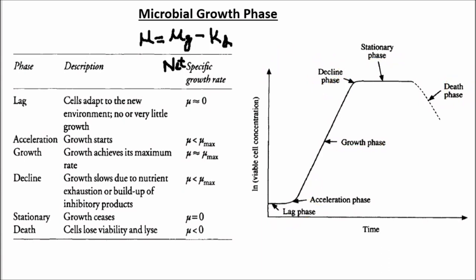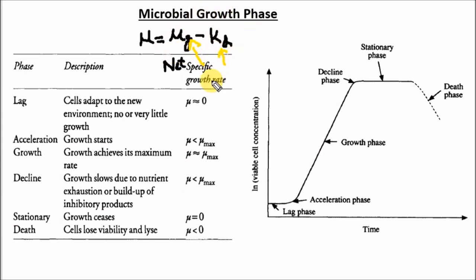Mu (μ) is the net specific growth rate, defined by the equation μ = μg − kd, where μg is the specific growth rate and kd is the specific death rate. In the lag phase, there is no growth and no death — μg = 0 and kd = 0 — so the net specific growth rate is equal to zero, and as you can see from the graph, the slope is zero.